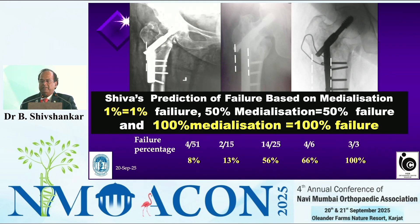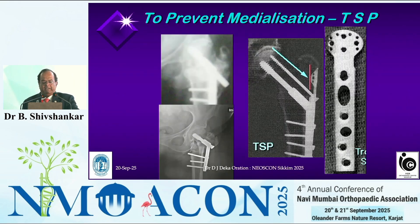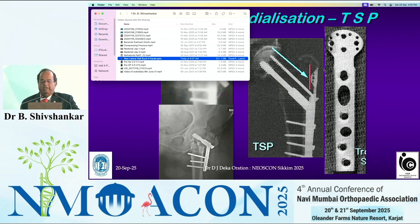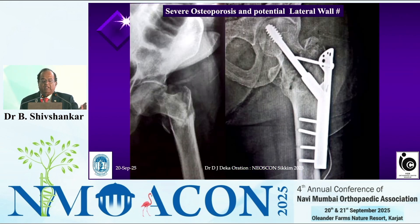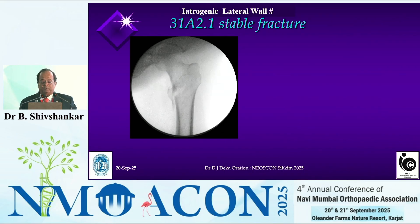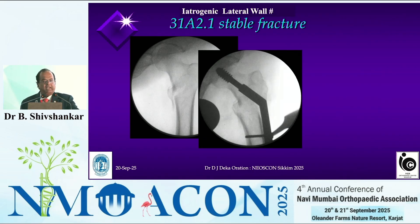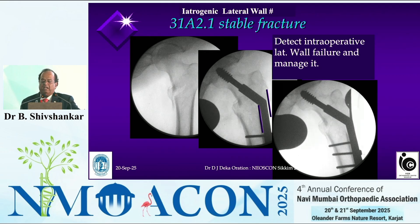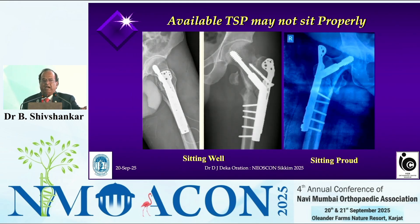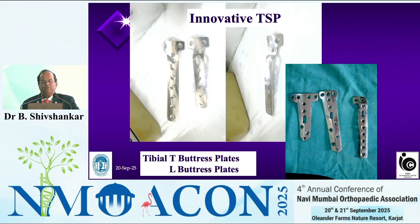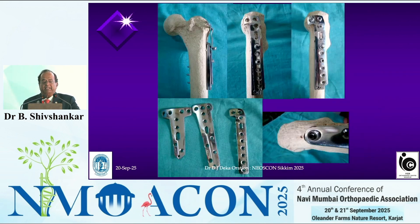Prevent medialization — that is the answer. If you are a plater, use a trochanter buttress plate to prevent medialization. The top portion of the plate acts as a buttress or stopper against the trochanter and that prevents medialization. Here is an X-ray where a trochanter buttress plate was used. I was operating and I realized I had broken the lateral wall — if I had not done anything I would have landed in failure. I applied a trochanter buttress plate immediately. The trochanter buttress plate available in the market doesn't fit all, especially elderly ladies, so I started using T-plates and L-plates.